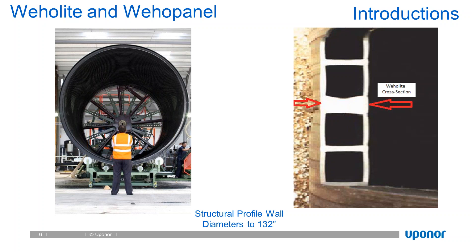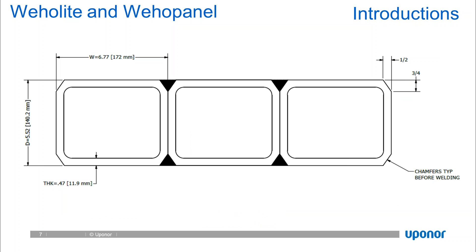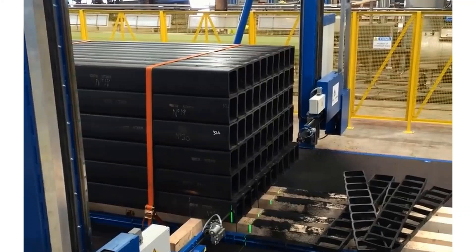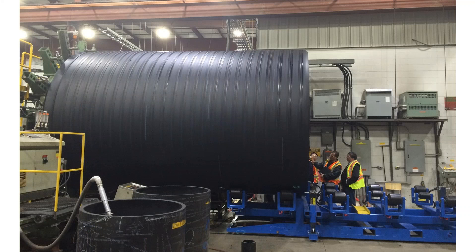Weholite is 100% polyethylene material. Here is a CAD snapshot of the Weholite cross-section—about 6.77 inches wide and 5.5 inches in depth. Each box extruded cross-section has inside and outside extrusion welds, shown as dark triangles, which attach the sections. This box cross-section can be combined to form circular pipe by extruding it and winding it in a helical fashion around a mandrel to create diameters of up to 11 feet.